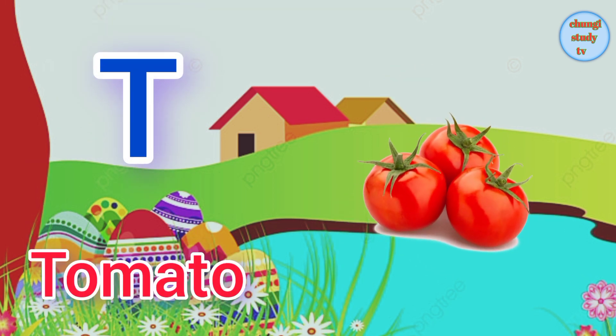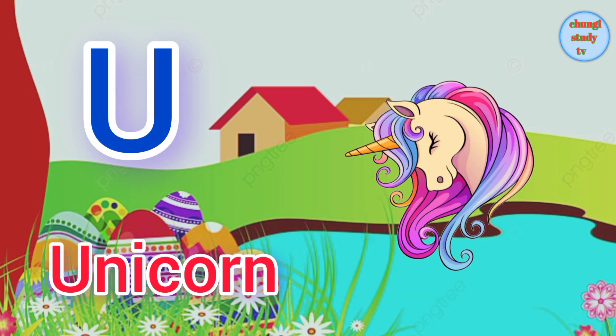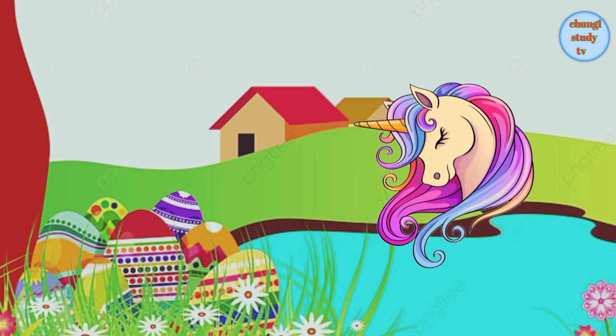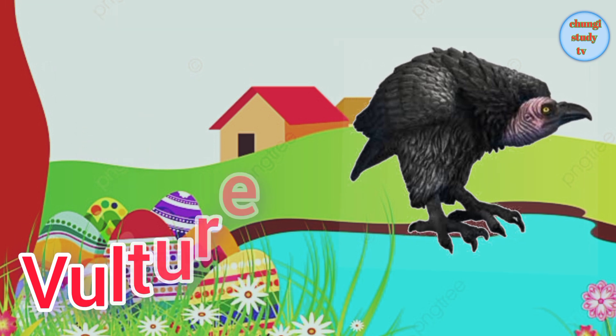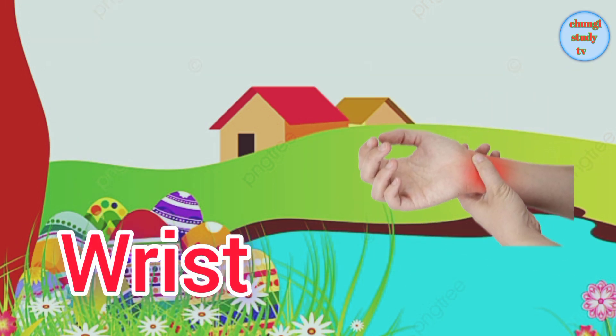T for tomato. U for unicorn. V for vulture. W for wrist.